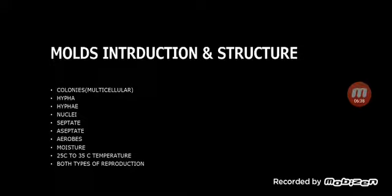For mold growth, moisture and a suitable temperature are required. The optimal temperature range for mold growth is 25 to 35 degrees Celsius. Molds reproduce by two methods: sexual and asexual reproduction.